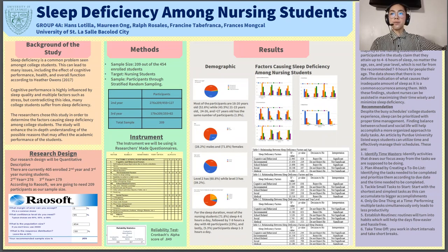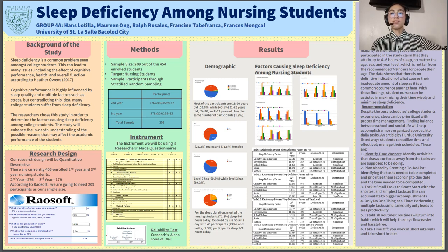For the research design, our research design will be quantitative descriptive. There are currently 405 enrolled 2nd year and 3rd year nursing students — 276 for 2nd year and 179 for 3rd year. According to Rouseoff, we are going to need 209 participants as our sample size.